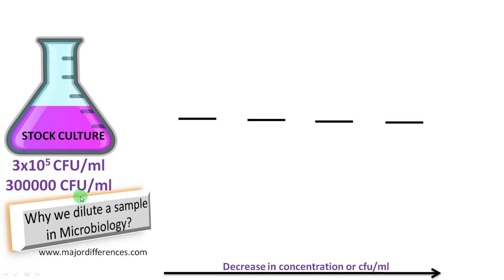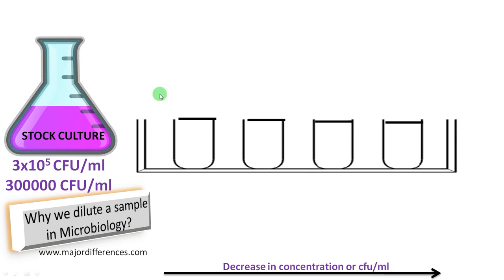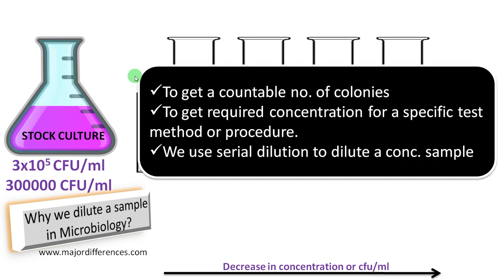Suppose we have a stock culture where the concentration is 300,000 CFU per ml. Each colony on this plate is called a colony forming unit. As you can see, this plate is very crowded to count. So the purpose of diluting the sample is first to get a countable number of colonies. Sometimes for a specific procedure we need to start with a specific concentration, and we use serial dilution to dilute a concentrated sample or stock bacterial culture.